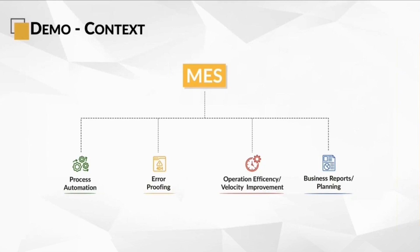Moving on to operational efficiency: imagine the operator having to calculate weight manually using a calculator, and the same process repeating on the quality control station. This hampers the velocity of production. Due to the automation of this process, the potential for increasing throughput multiplies. For business reporting: it's imperative for the business to gain insights into day-to-day activities. Reports help management make informed decisions. Some examples of KPIs include the number of items produced per unit time, best performing stations, stations reporting the highest number of write-offs, which operator is taking a break and for how long, and how different shop floors or factories are performing in comparison.